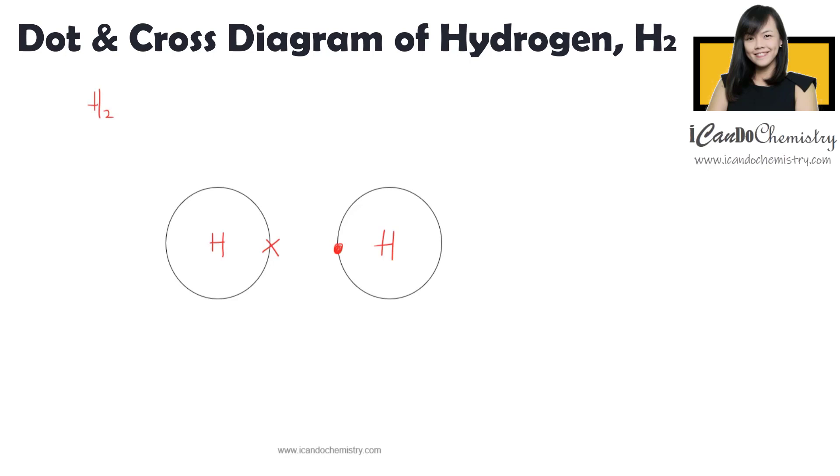So when they come together, what will happen is each of them will share one electron. So hydrogen, hydrogen, each of them will share and we represent the sharing by drawing the electron in the overlap region.